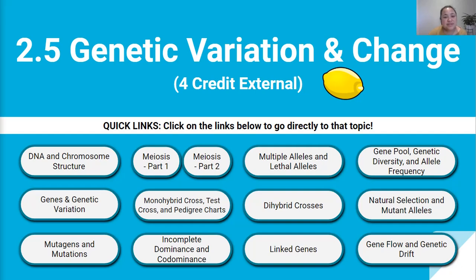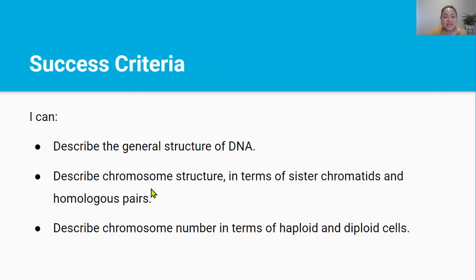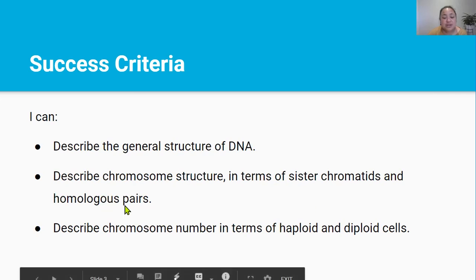Kia ora team! Welcome to the 2.5 Genetic Variation and Change 4 Credit External video series. This is video 1. In this video you'll be learning about DNA structure and chromosome structure. By the end of this video you should be able to describe the general structure of DNA, describe chromosome structure in terms of sister chromatids and homologous pairs, and describe chromosome number in terms of haploid and diploid cells.